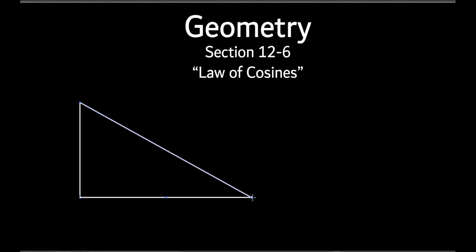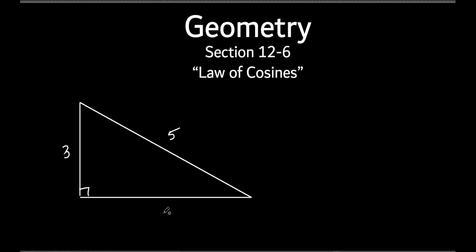Up to this point, in this chapter anyway, for the trig stuff, what kind of triangles have we always dealt with? Right triangles. Okay, we always had a right triangle. So if they gave us two sides, you should be able to find all the missing stuff now. You should be able to find this angle, this angle, and this side.